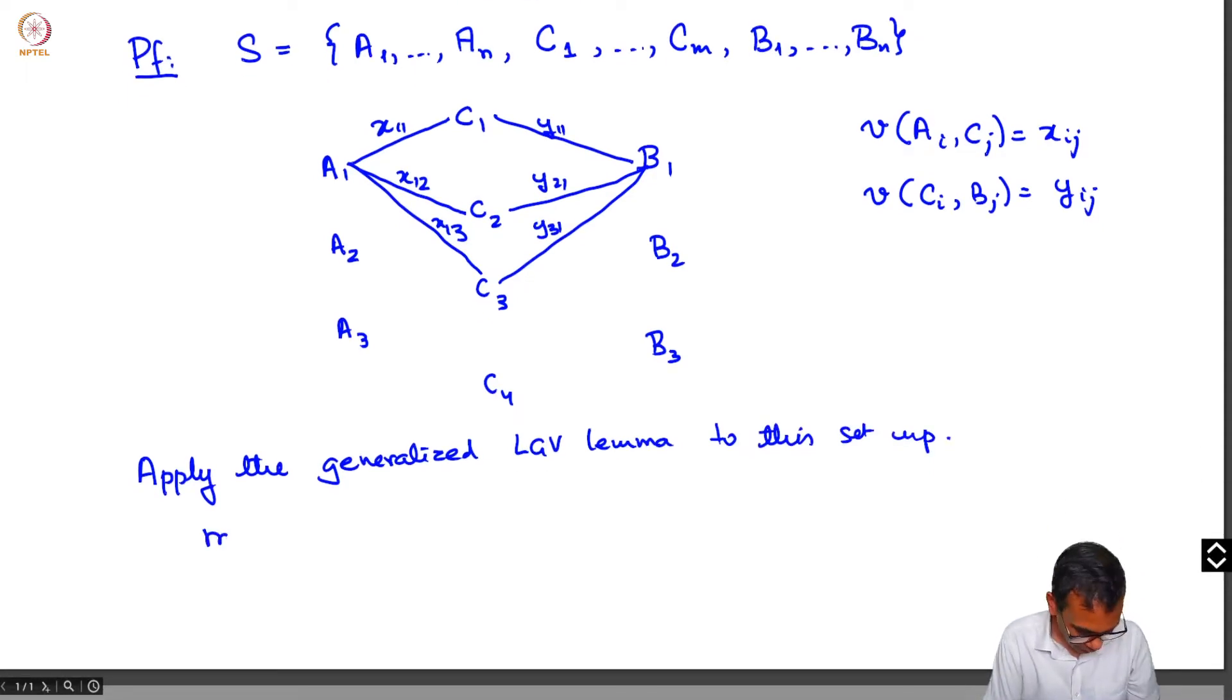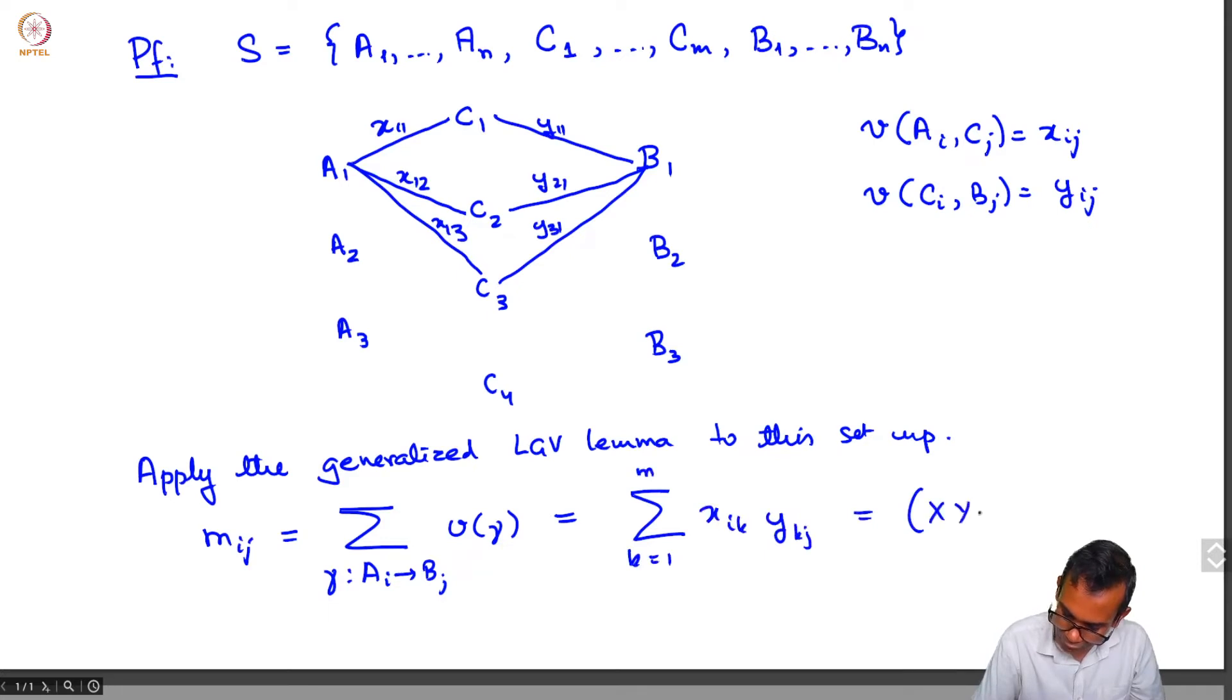What we get is mij is the sum over paths gamma from ai to bj of v(gamma). This is nothing but sum k goes from 1 to m, xik ykj. So that is just the ijth entry of x times y.